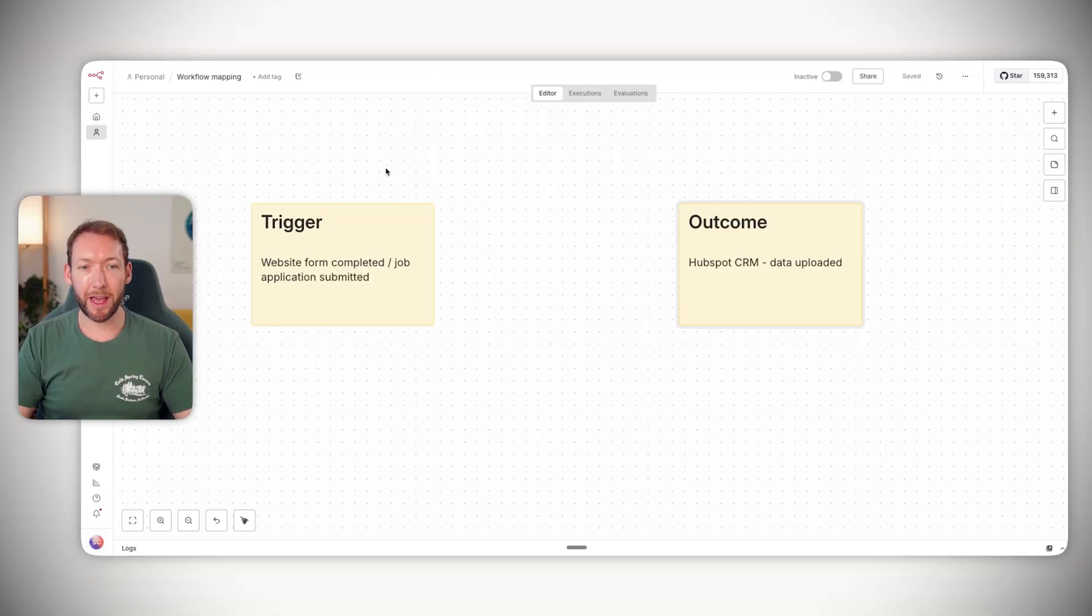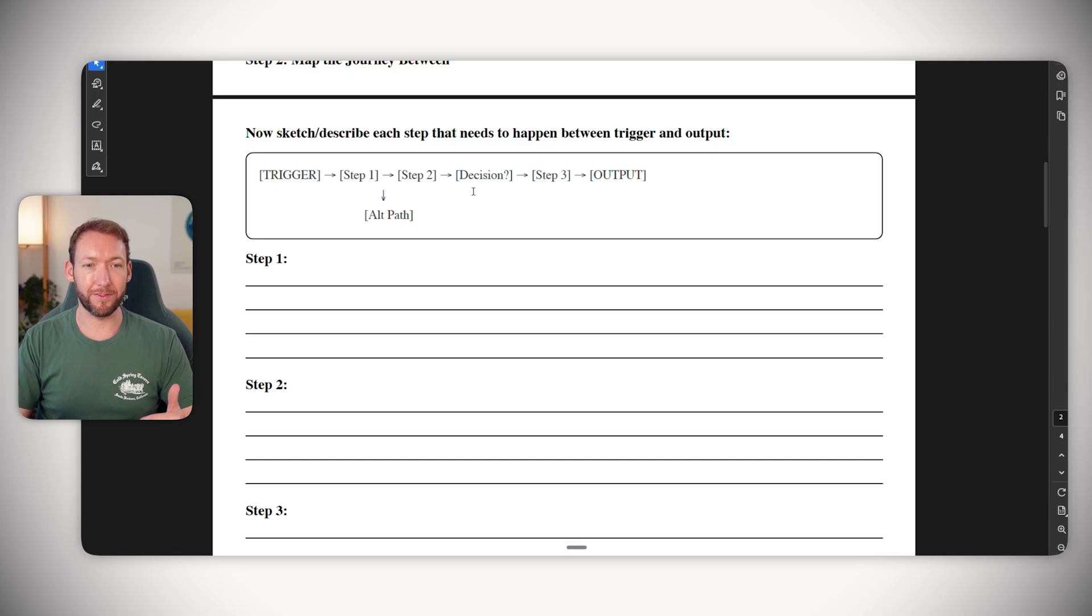This could be coming from an external site like Indeed, or it could be an internal process on our own website. So now we have where we want to start, which is taking in data from a website form. We know where we want to get to - clean data in our HubSpot CRM. Now we can start mapping out what comes in between that. What we're effectively doing is mapping the journey between the start and the end here. And at this point, we're not thinking about the specifics of the data. We're doing a high level mapping exercise because it's going to help us understand exactly what steps and what decisions need to be made in between that.